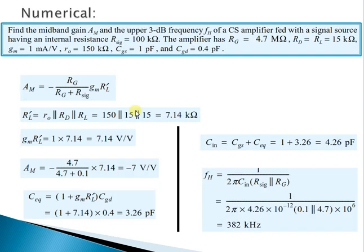We will now solve a numerical example. We are asked to find the midband gain AM and the upper 3 dB frequency FH for a common source amplifier with: R_signal = 100 kΩ, RG = 4.7 MΩ, RD = RL = 15 kΩ, GM = 1 mA/V, R0 = 50 kΩ, and given values of CGS and CGD. Note that the coupling and bypass capacitors are treated as short circuits in this high-frequency analysis, so they do not appear in these equations.